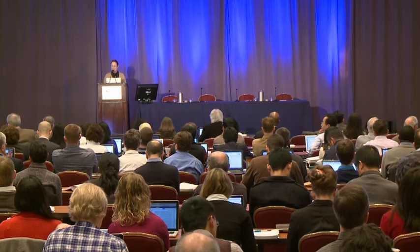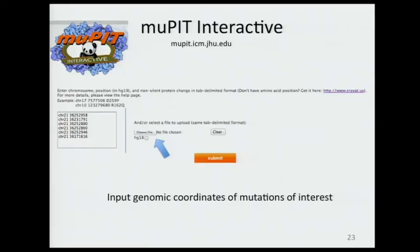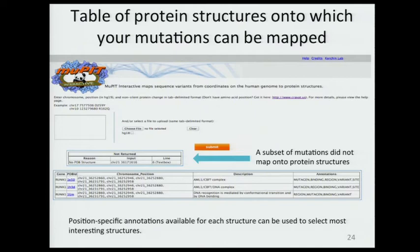Let's talk about Muppet Interactive — this is a brand new tool. You input genomic coordinates of mutations you're interested in; you can upload a file or put them in a text box. Right now we support up to 2,500 at a time and are trying to make this larger. When you submit, you are immediately returned a table which is a list of protein structures from the PDB onto which your mutations can be mapped, along with descriptions of the genes and available annotations pre-mapped onto these structures.